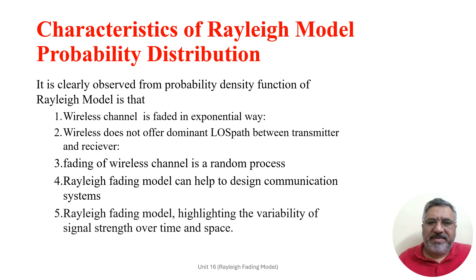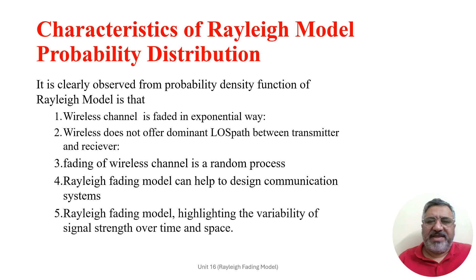There are some important characteristics of the Rayleigh fading probability density function. The most important characteristic is that the PDF exhibits exponential decay. The Rayleigh fading density function shows an exponential decay, indicating that higher signal strengths are less likely to occur, reflecting the randomness of the fading channel where the probability of observing high signal strength decreases very rapidly.